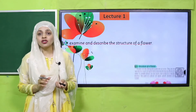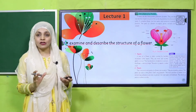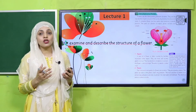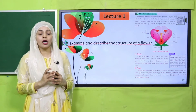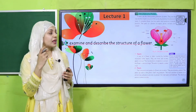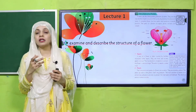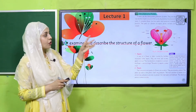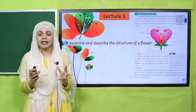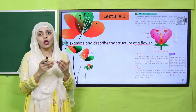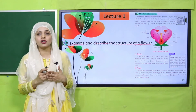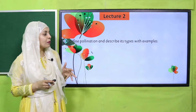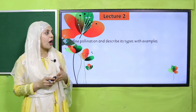Jab hum first lecture start kareenge is chapter ka, to tamam bachche jo hain, wo different parts of a flower — they will be able to examine them and describe the different structures. This will be done in lecture number one, then we will move forward towards lecture number two.